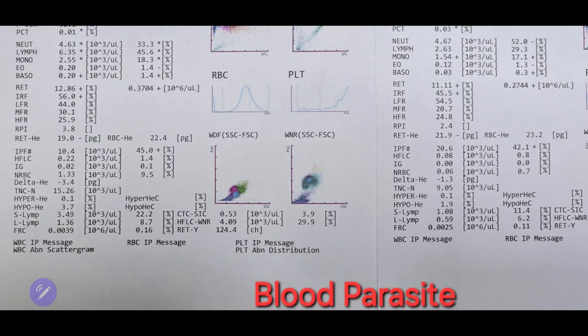When we examine the RET-HE value, we should also consider the MCV and MCH values, not just the RET-HE alone. In this scenario, the increase to 21.9 indicates that the dog is eating more. You'll notice that both the S-lymph and L-lymph values are good. Comparing the percentage ratios, the post-treatment values show improvement.